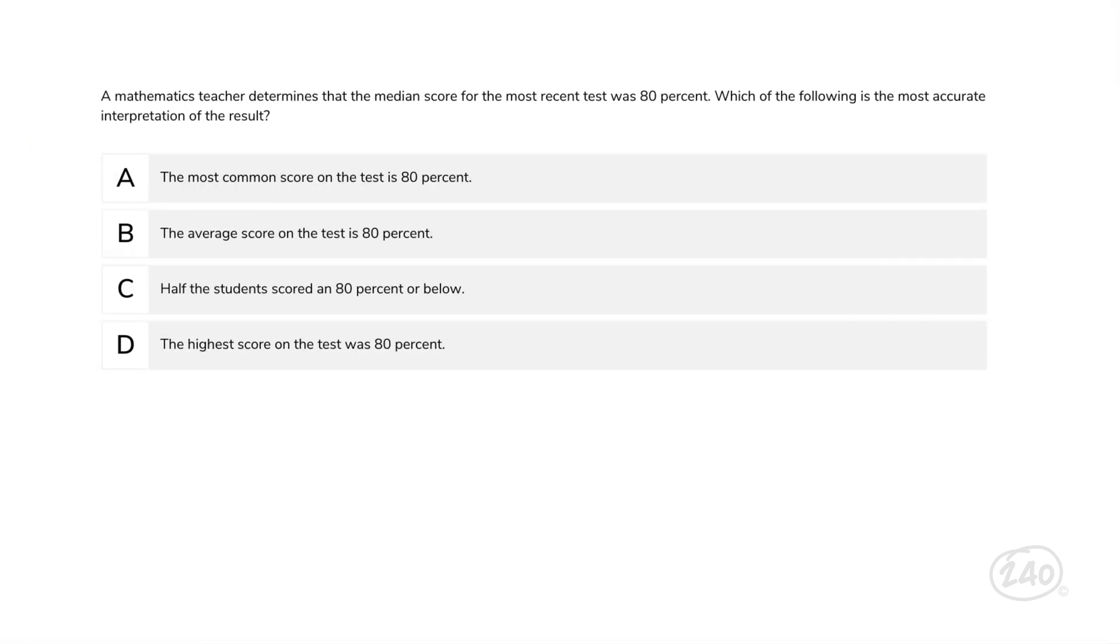Another one. A mathematics teacher determines that the median score for the most recent test was 80%. Which of the following is the most accurate interpretation of the result? To answer this question, you need to define mean, median, and mode. Got those in your brain? Then you know that the right answer is... C.